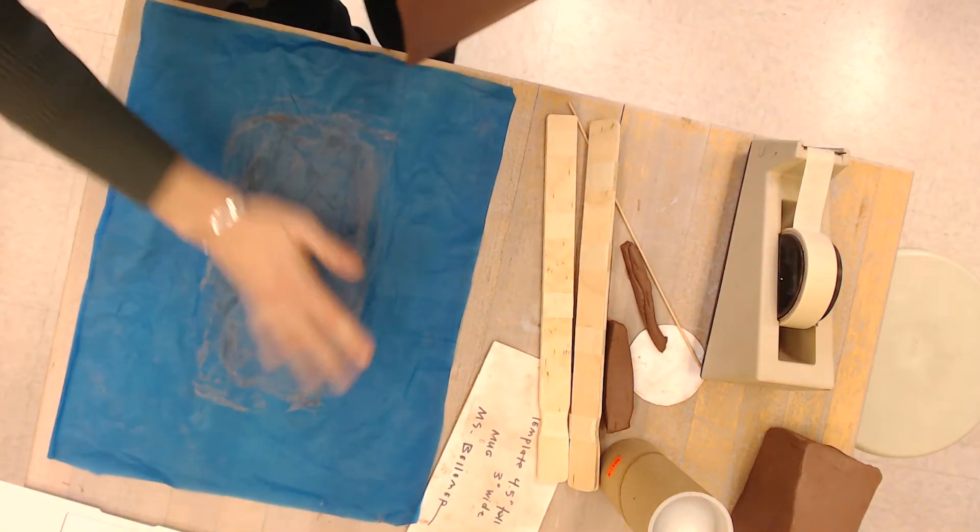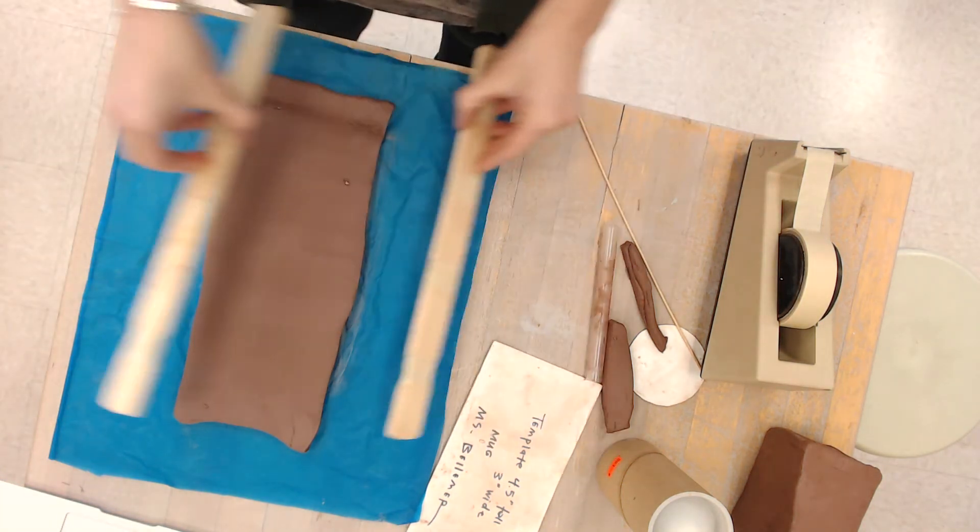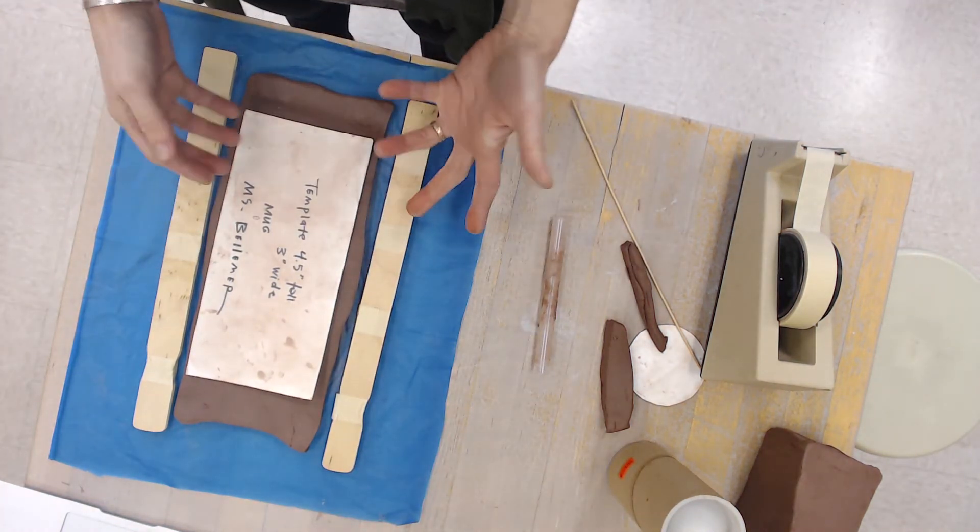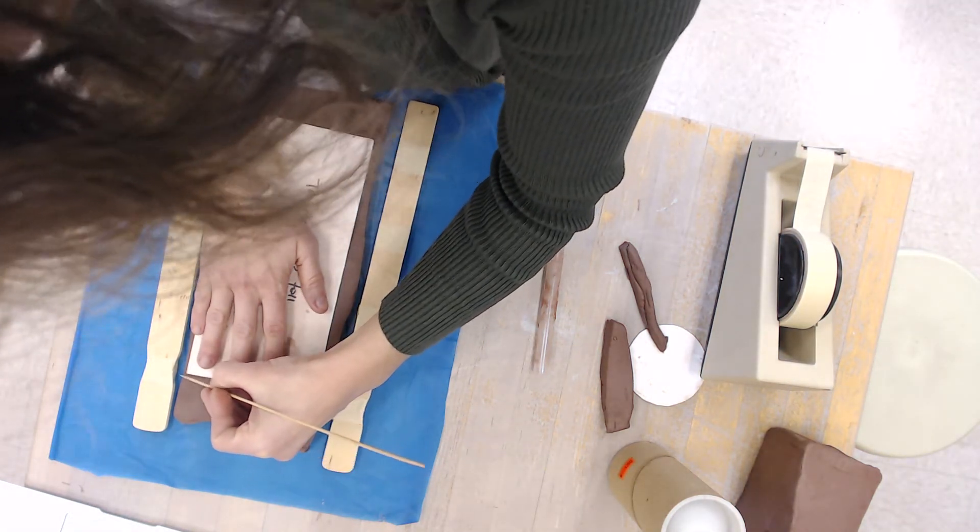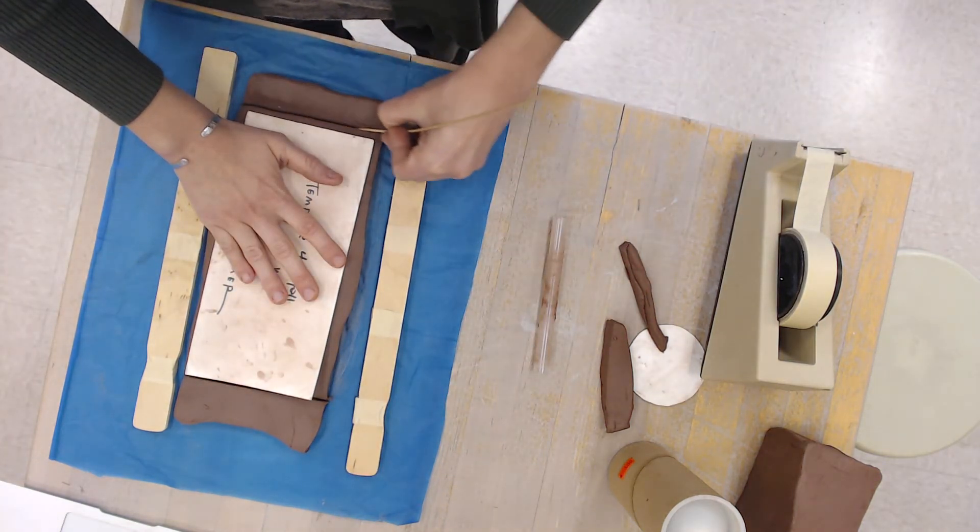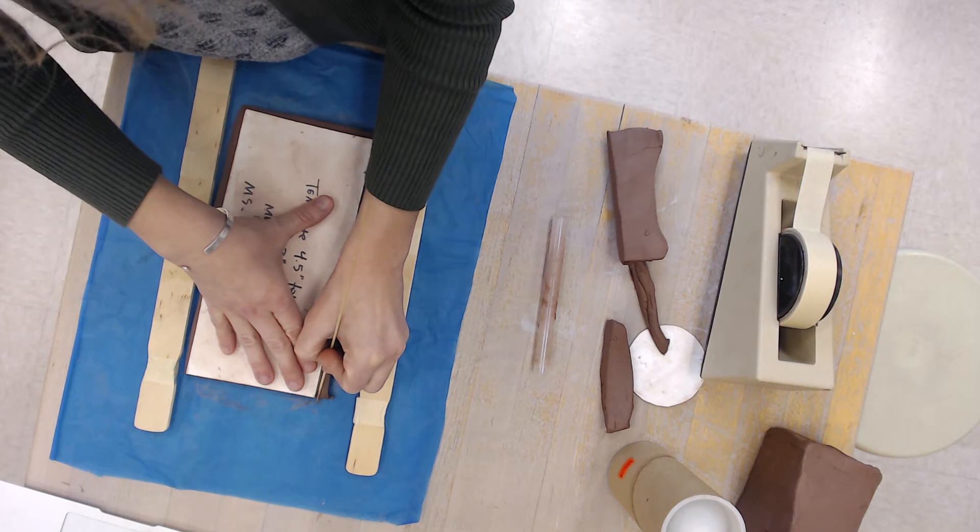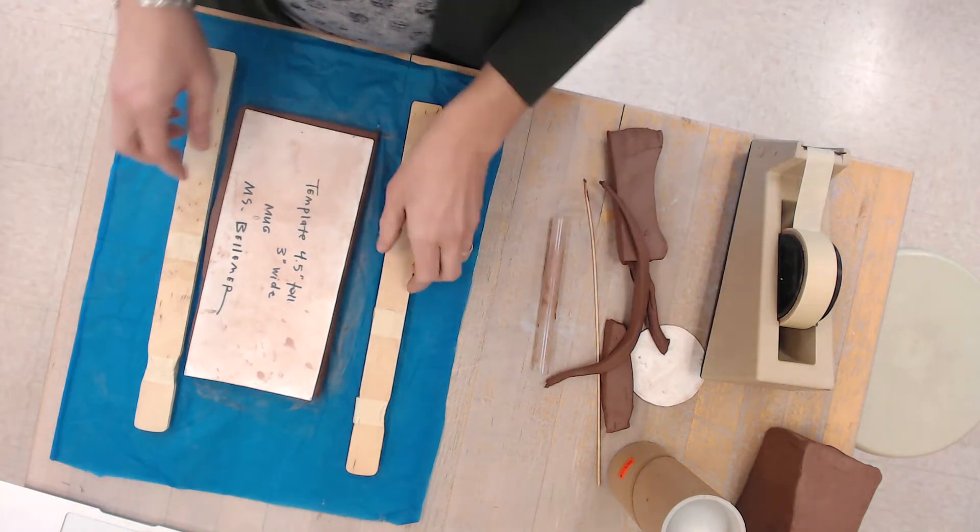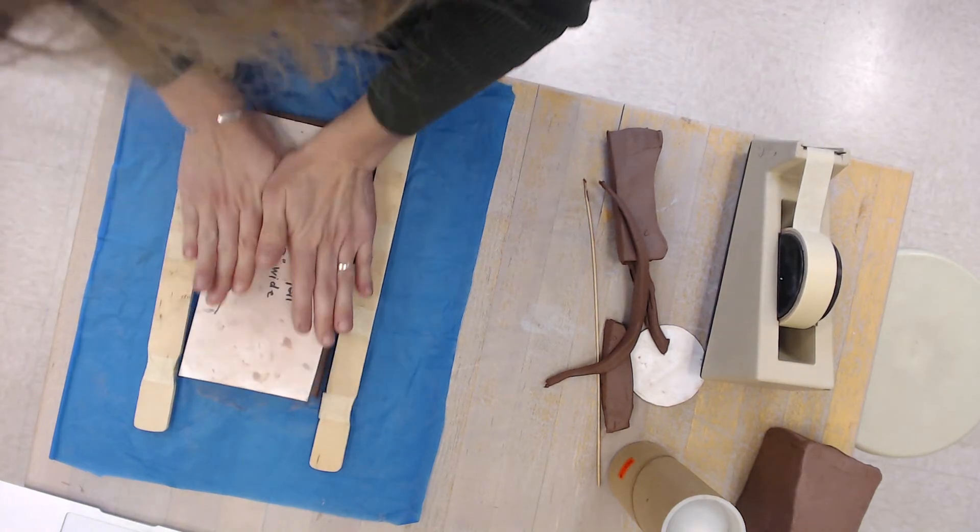If you're finding the rolling to be a bit difficult, you might stretch the clay out a little bit, put your sticks back up and then go back and check your template. As I can see, this is way longer than I need it to be. So I'm just going to cut it a little bit. And then I'm going to go back to rolling because it's still too thick.